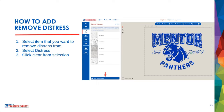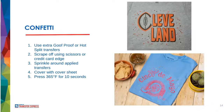If you don't want the Panther to be distressed, just select the Panther, go back into the distressing menu, and click 'Clear from Selection' — it's going to clear the distressing from just that selection. So you can have whatever text and whatever images as distressed or non-distressed as you want.